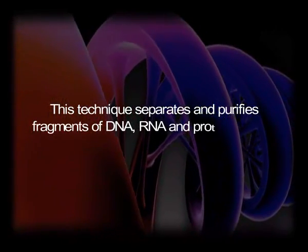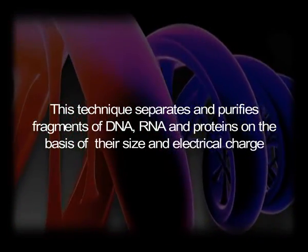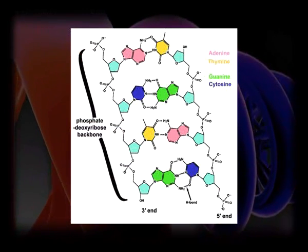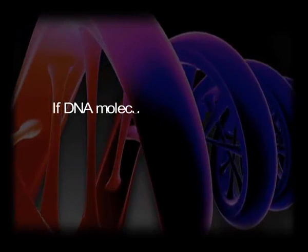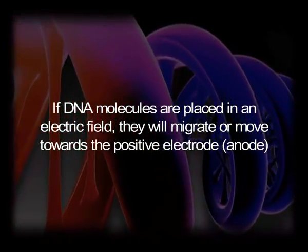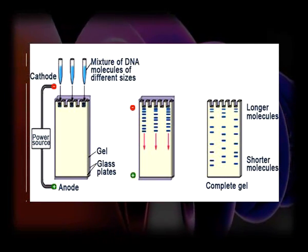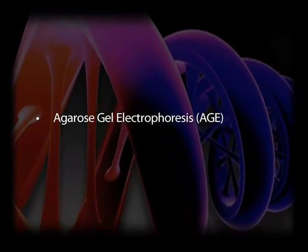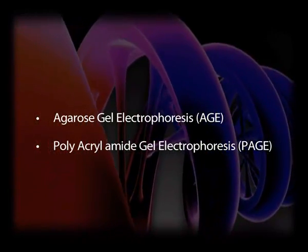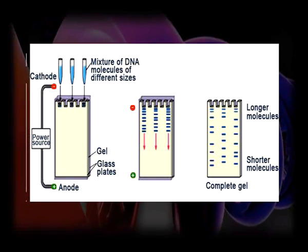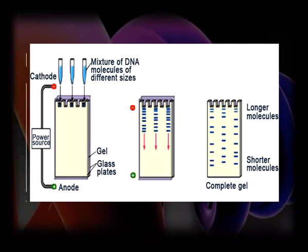Gel electrophoresis is a technique that separates and purifies fragments of DNA, RNA, and proteins on the basis of their size and electrical charge. DNA has a net negative charge due to the oxygen atoms associated with the phosphate group joining nucleotides on both DNA strands; therefore, if DNA molecules are placed in an electric field, they will migrate towards the positive electrode. To separate fragments of different sizes, electrophoresis migration is performed through a gel as a support medium. Two gel systems widely used are agarose gel electrophoresis and polyacrylamide gel electrophoresis. Smaller molecules migrate at higher speed than larger molecules, enabling separation of DNA molecules by size.